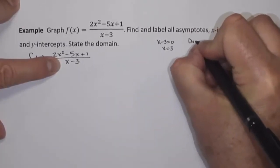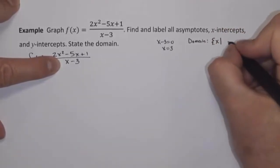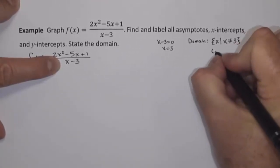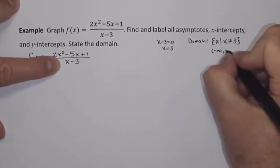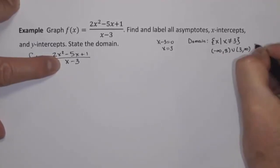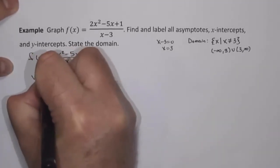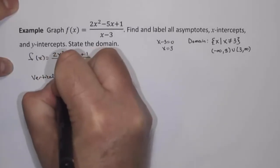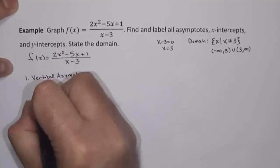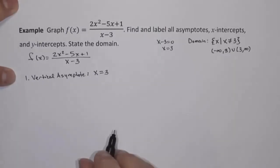Our domain is going to be all real numbers except 3. In interval notation, x can be anything from negative infinity to 3, union 3 to infinity. That also gives us our vertical asymptote. We only have one vertical asymptote, and that is the vertical line x equals 3.